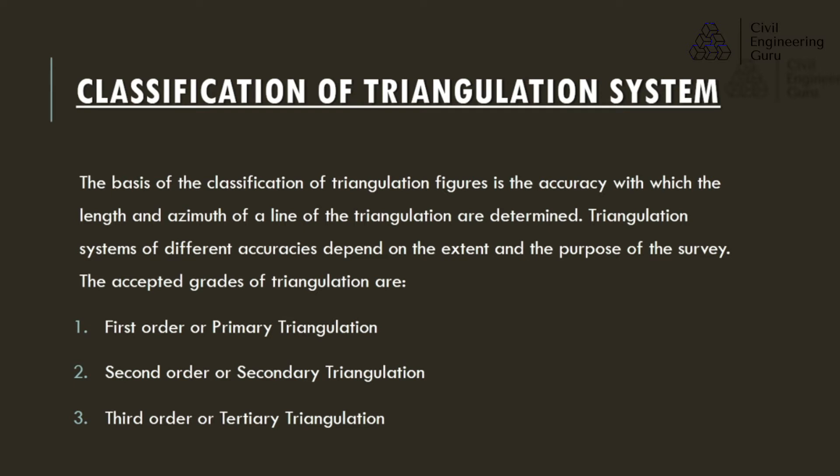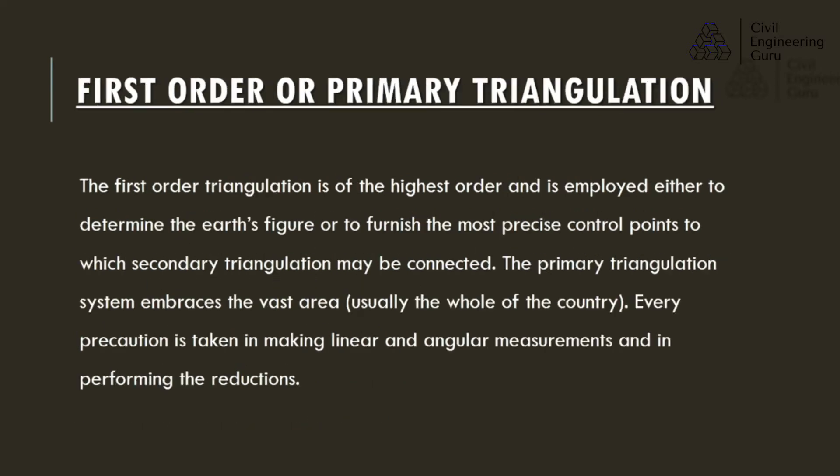Classification of triangulation system: the basis of classification is the accuracy with which the length and azimuth of a line of the triangulation are determined. Triangulation systems of different accuracies depend on the extent and purpose of the survey. The accepted grades are: first order or primary triangulation, second order or secondary triangulation, and third order or tertiary triangulation.